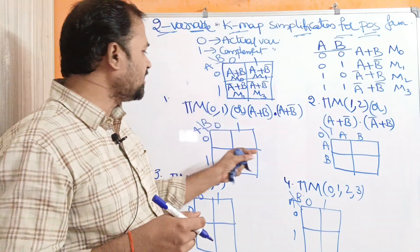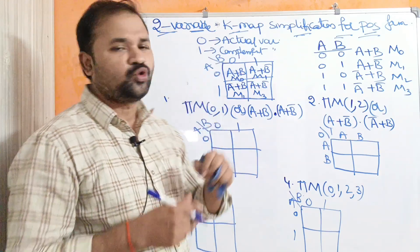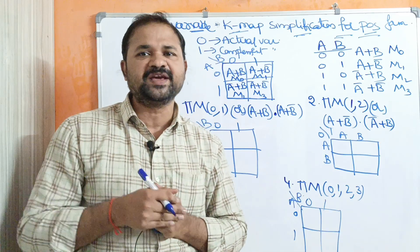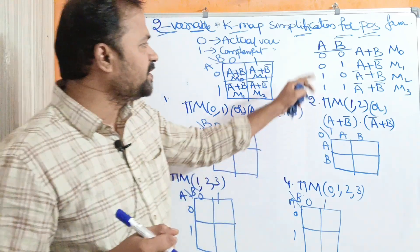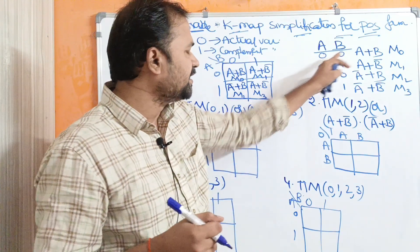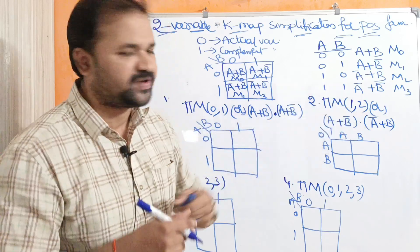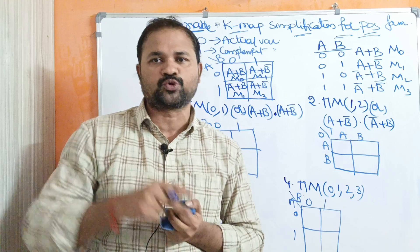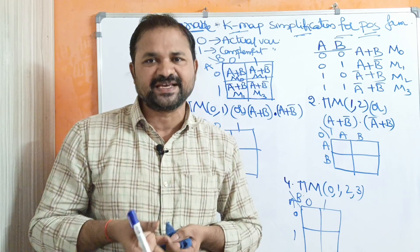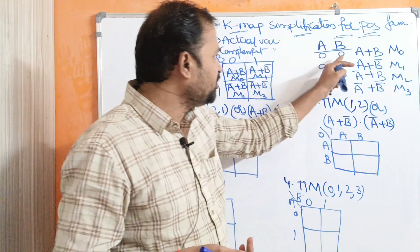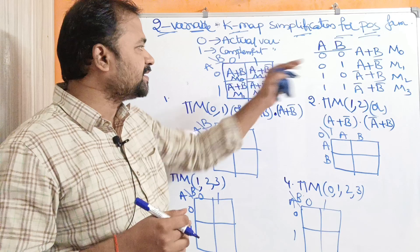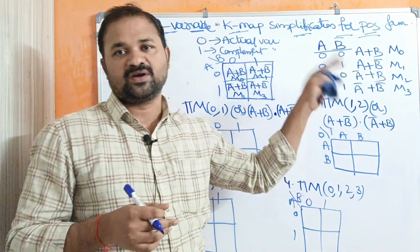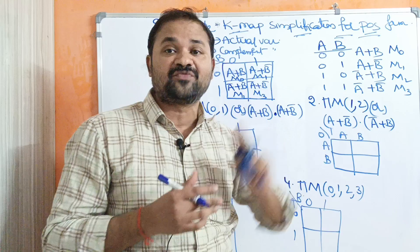We will solve four examples on the two-variable Karnaugh map. If we have two variables, the possible combinations are 00, 01, 10, 11. With two variables, we have 2 squared equals four cells. In POS form, for 0: 0 means actual variable, and 1 means complement of the variable.